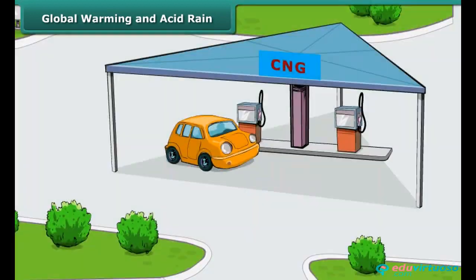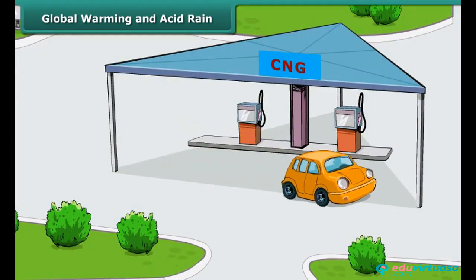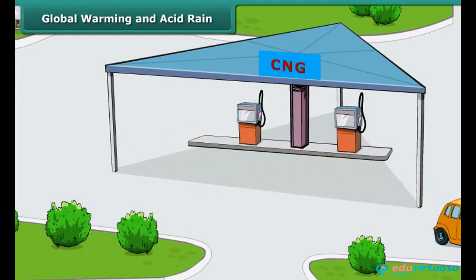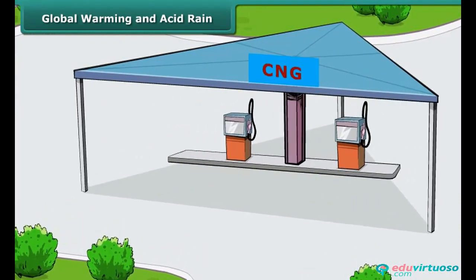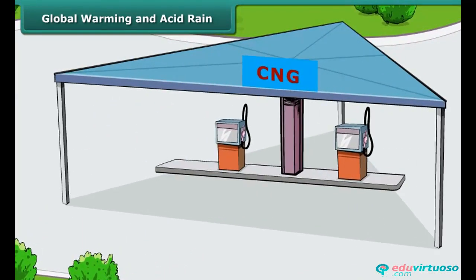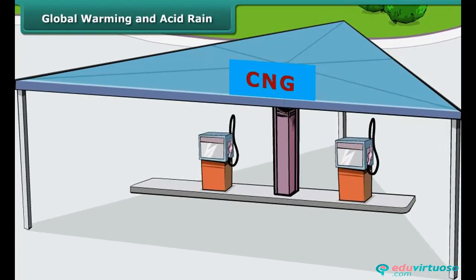There are ways we can reduce the negative impact on the environment by choosing the right fuel. A great example of this is cars, buses, and auto rickshaws that run on compressed natural gas or CNG instead of petrol. CNG is a much cleaner and cheaper fuel.